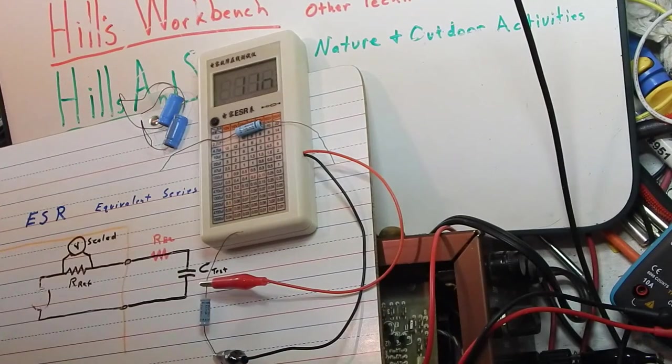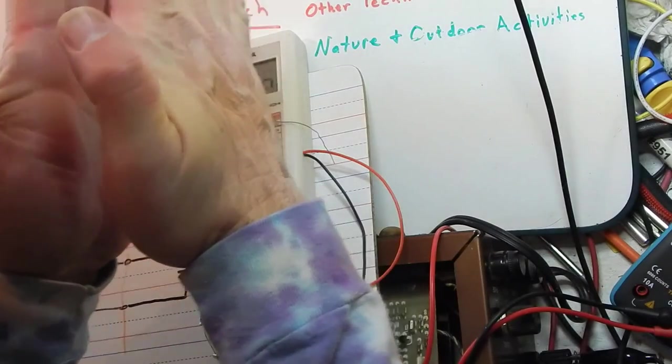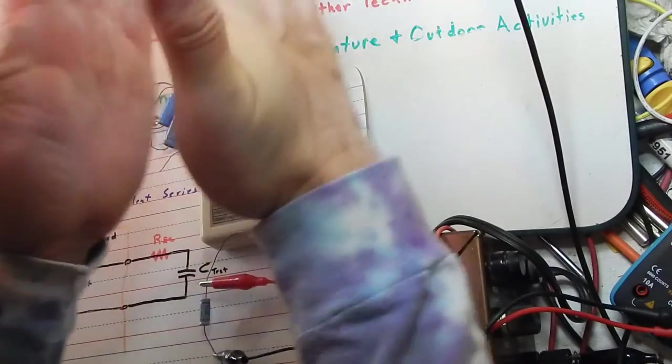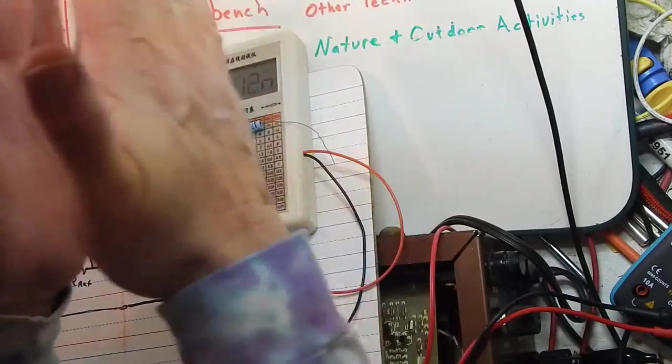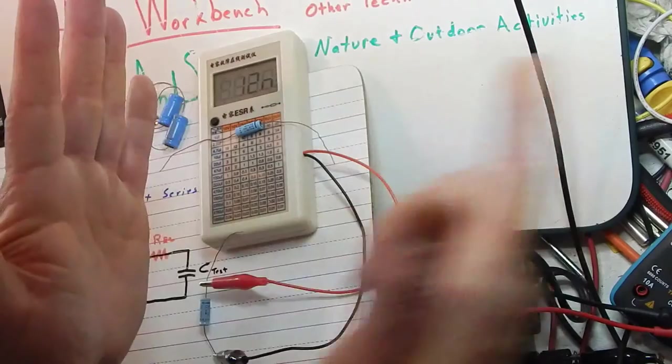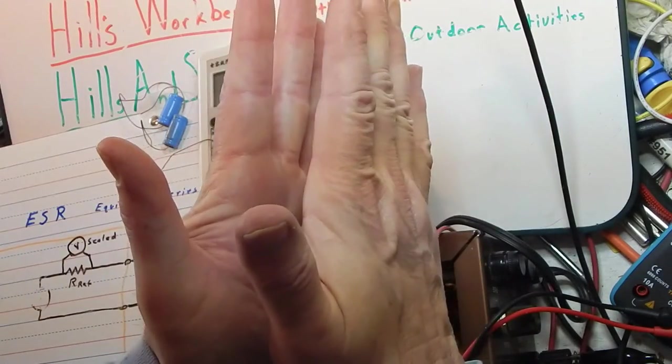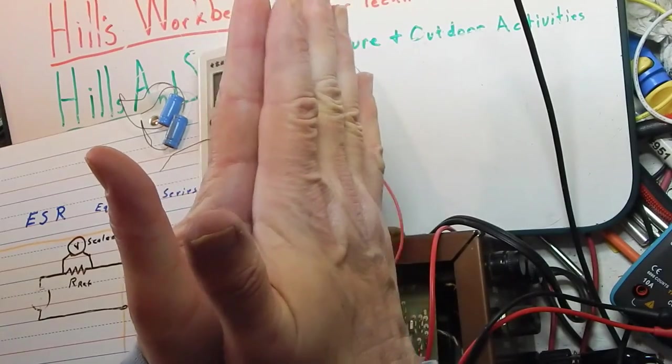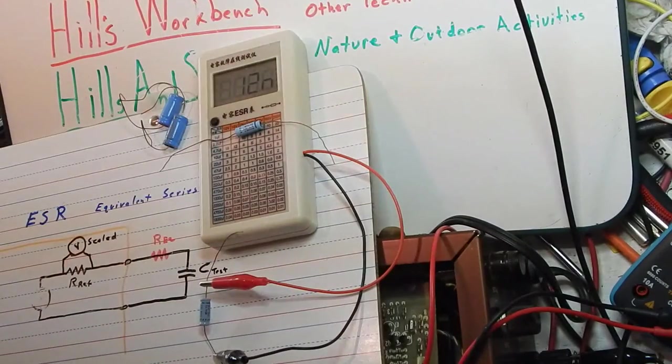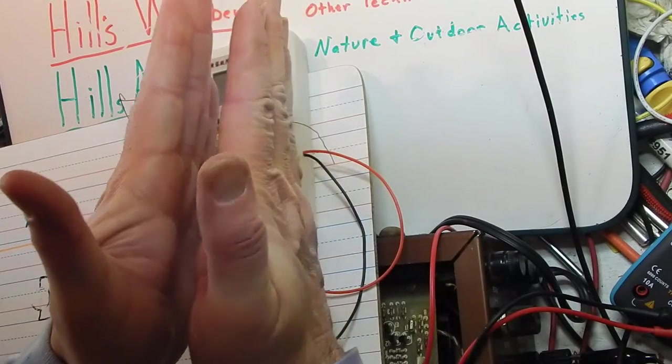So what happens to electrolytics without going too deep into the theory? I'll go through it real quick. You've got two plates in the capacitor, two plates separated by an insulator. Nothing ever flows from one plate to the other in an ideal capacitor. In an electrolytic capacitor you've got two aluminum plates and you've got a conductive electrolyte between them. So initially when a capacitor is made, it's a conductor. There's nothing to really stop it from going from one plate to another.